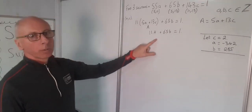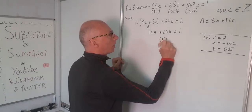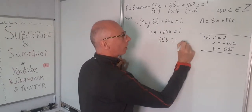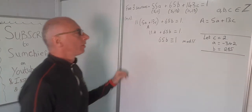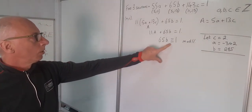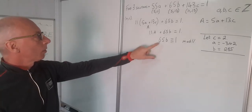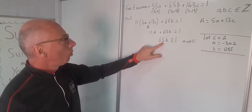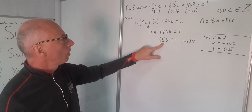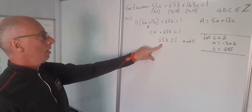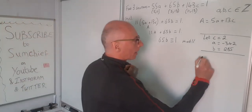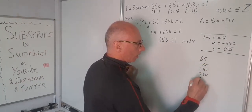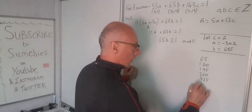Now as before, I need a solution to 65B congruent with 1, and because the coefficient here is 11, I'm working mod 11. So what value of B makes this congruent to 1? I'll keep multiplying: 65, 130, 195, 260, 325, 390... let me just write those down. 65, 130, 195, 260, 325, 390.